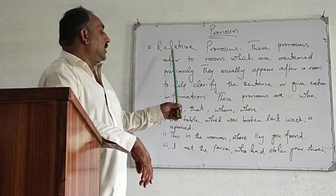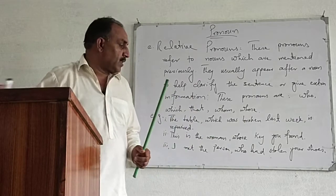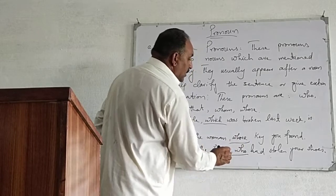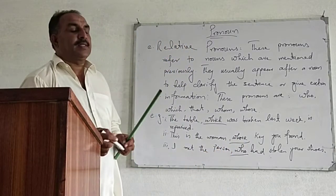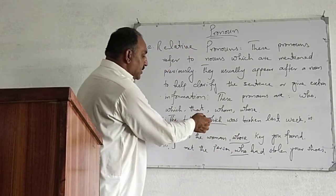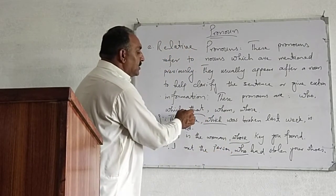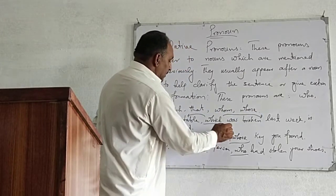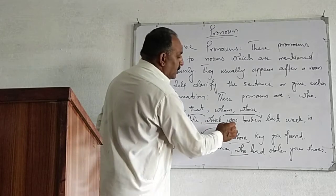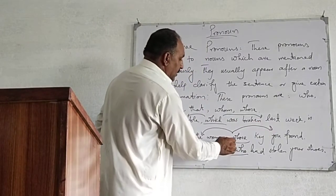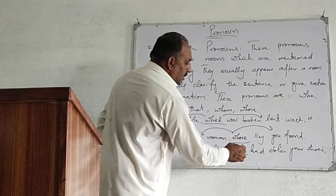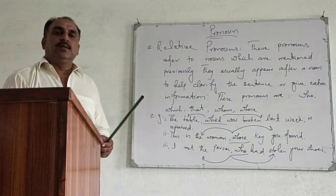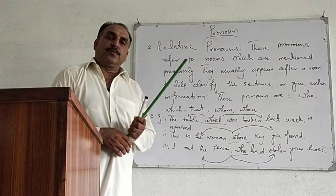So the underlined words are the relative pronouns. They relate the previously mentioned noun with the rest of the detail — the previously mentioned noun with the additional information. This is the relative pronoun.